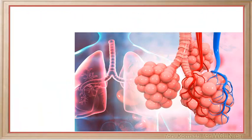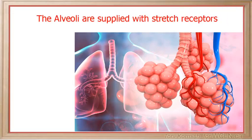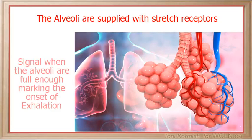The alveoli are supplied with stretch receptors — these are nerve endings that are sensitive to stretch. During inhalation, they signal when the alveoli are full enough, thus marking the onset of exhalation.